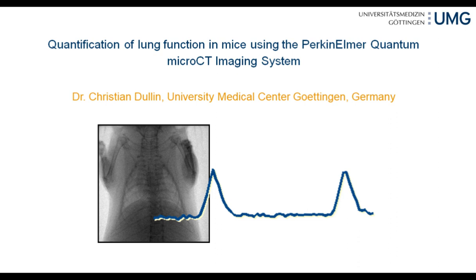Dr. Duleen studied technical physics at the Friedrich Schiller University, Jena, and finished his thesis based on extracting the 3D skull out of MRI data sets in 2001. In 2004, he moved to the Institute for Diagnostic and Interventional Radiology at the University Medical Center Göttingen, where he was responsible for technical aspects of preclinical imaging. He finished his PhD on novel imaging strategies for preclinical lung research in 2015. He was part of several European projects, including the Public-Private Partnership for Asthma Genomics and Imaging. Dr. Duleen has founded his own subgroup at the UMG focused on x-ray-based preclinical imaging techniques.